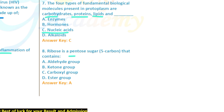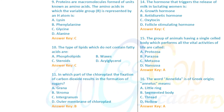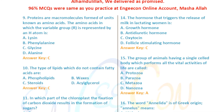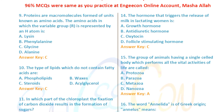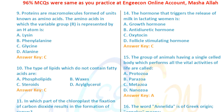Question: Ribose is a pentose — a five-carbon sugar — and it does contain an aldehyde group. Question 9: Proteins are macromolecules whose units are known as amino acids.